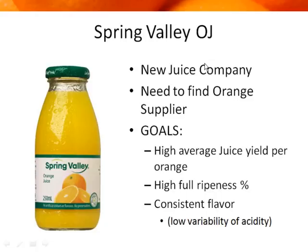Their goal to select an orange supplier is to make sure that the oranges have high juice yield — they want the average juice yield to be very high. They also want a large percentage of the supply to be at full ripeness. Because they want to maintain a brand image, they want consistent flavor, measuring this using acidity, with low variability of the acidity.